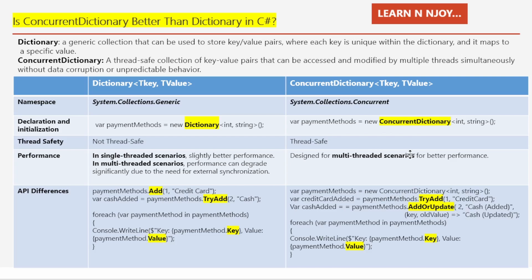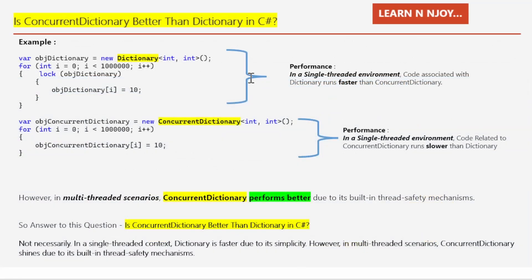For ConcurrentDictionary, we have TryAdd and the unique AddOrUpdate method. AddOrUpdate takes three parameters: the key to add, a value to add if the key doesn't exist, and a factory function for updating if the key does exist — for example, paymentMethod.AddOrUpdate(2, "Cash Added", (key, oldValue) => "Cash Updated"). Retrieval works the same way as Dictionary, using a foreach loop and accessing item.Key and item.Value.